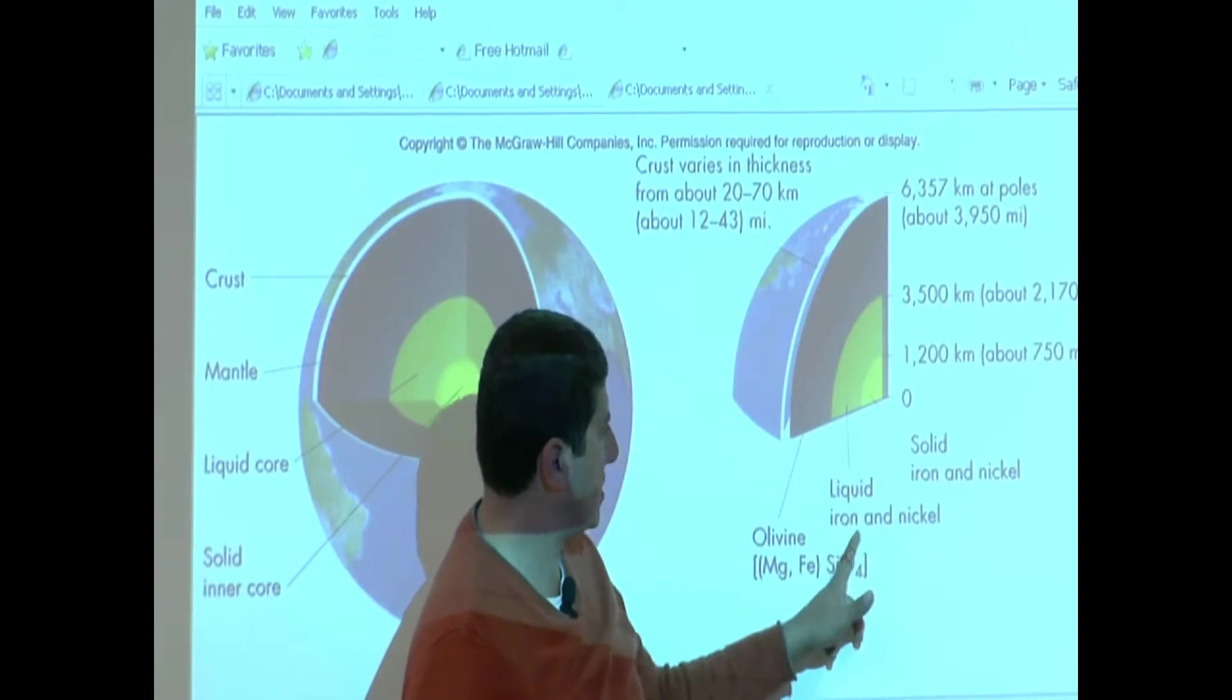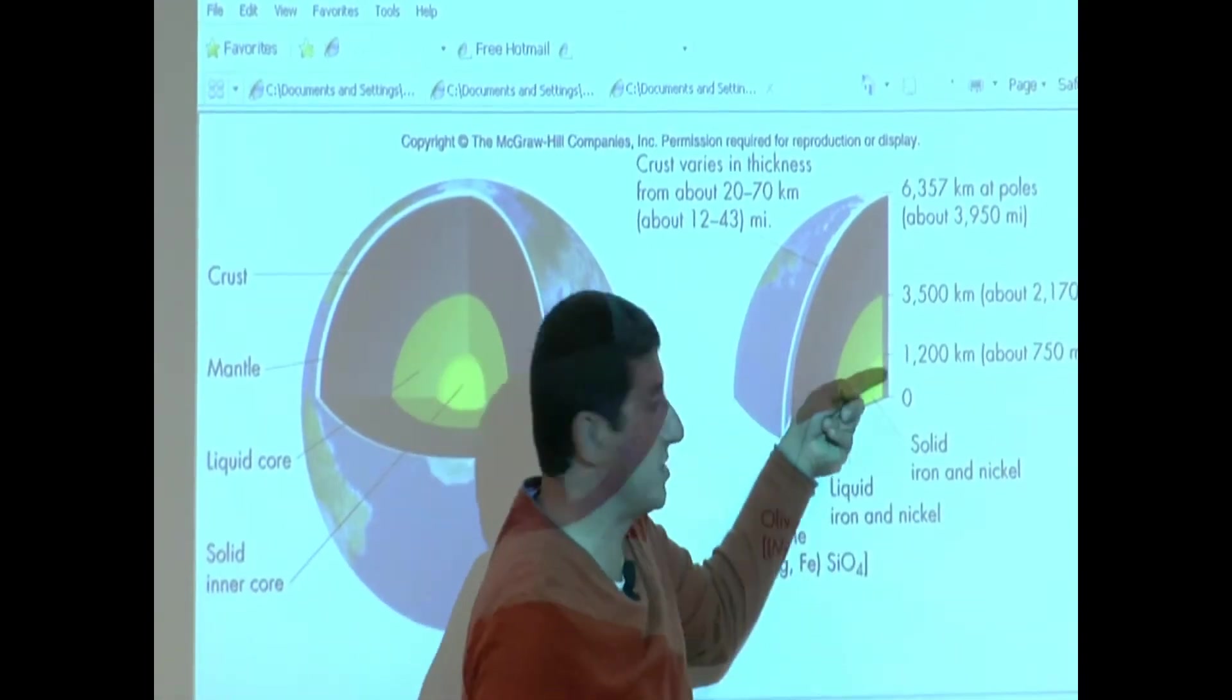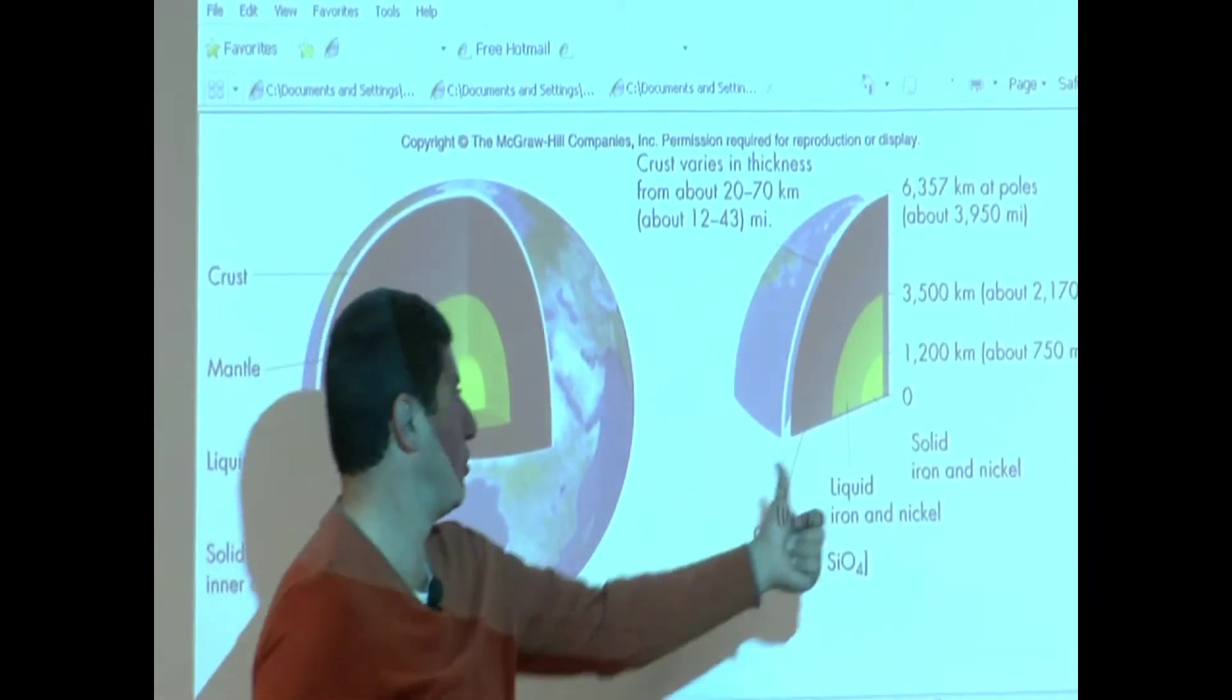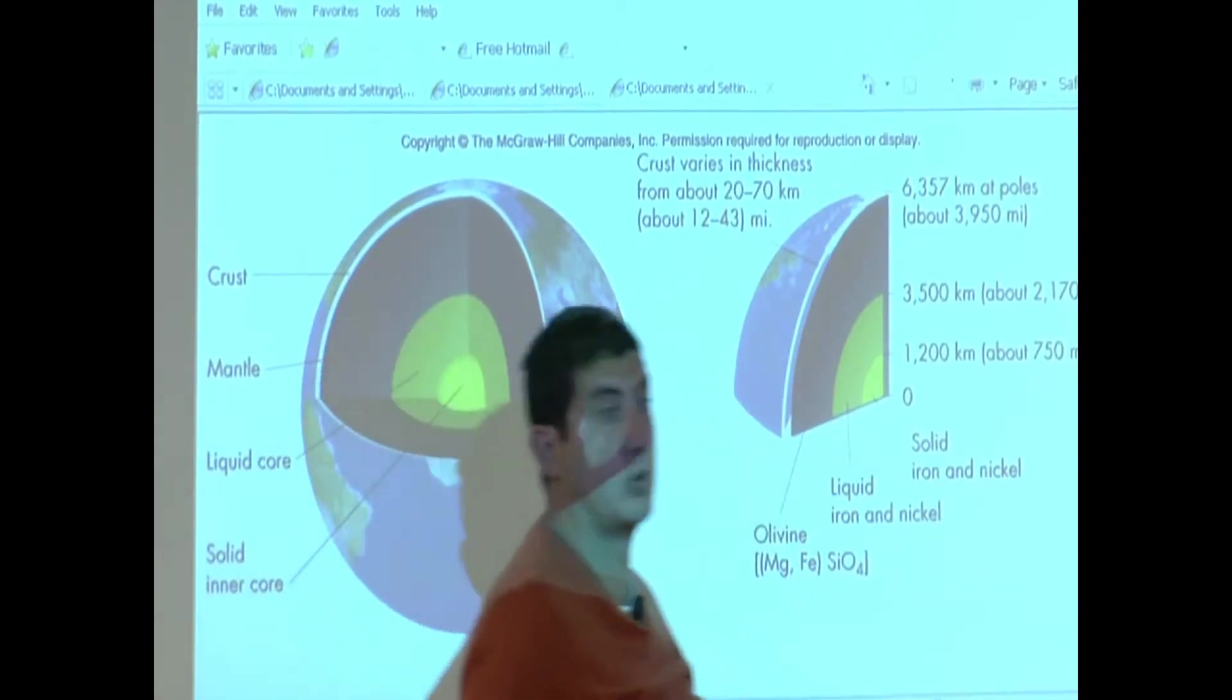This part is liquid iron and nickel. Solid iron and nickel. As you're going inward, the material is getting denser and denser, more metallic. As you go more outward, it's getting lighter in density and more rocky.